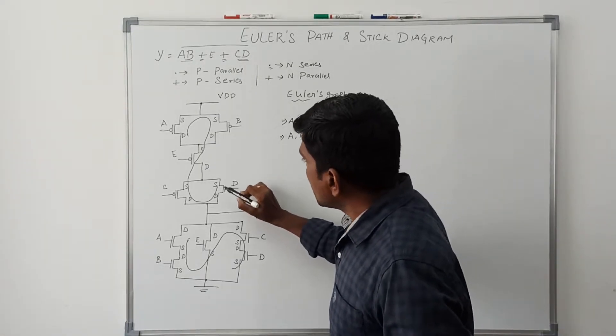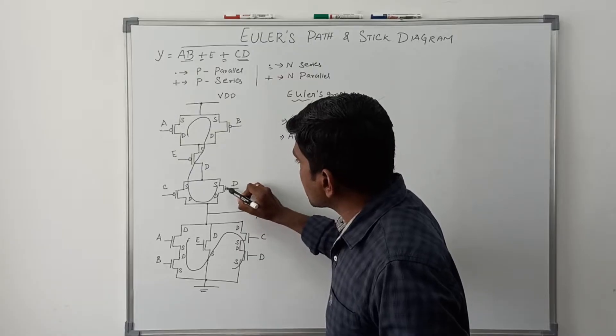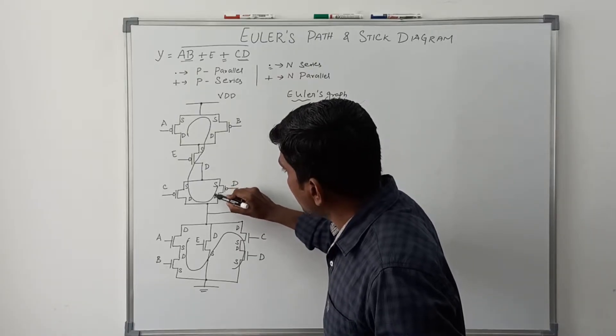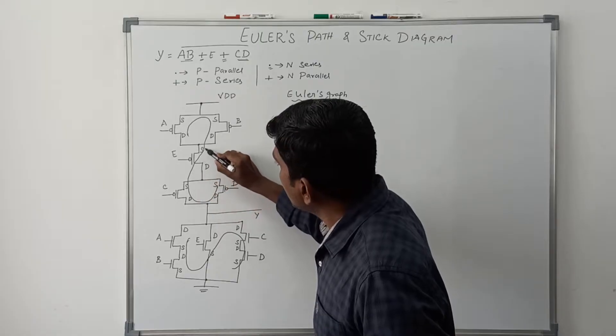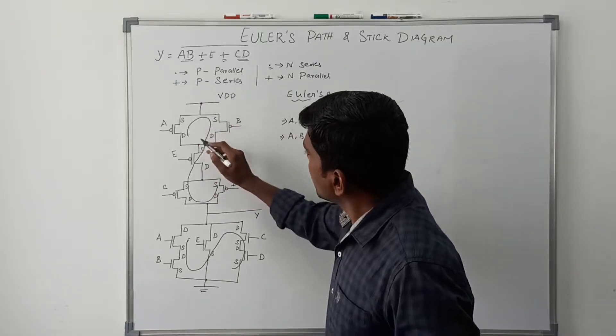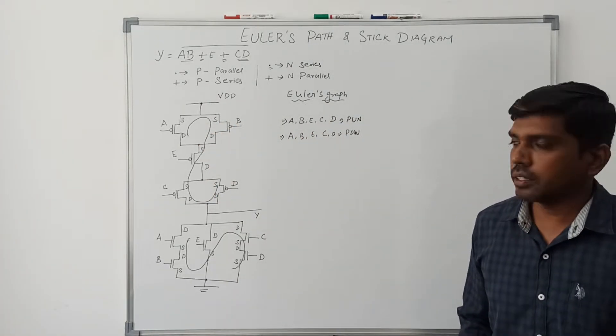Suppose I take the D transistor as the starting point — then the path is D, C, E, B, A. This solution is also correct. So there are multiple valid Euler paths.